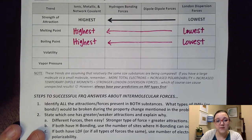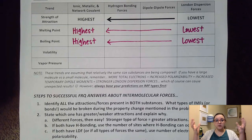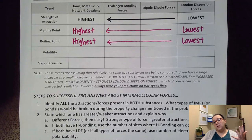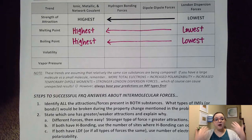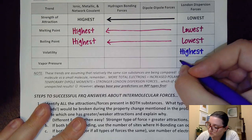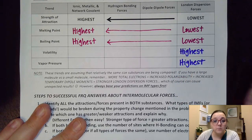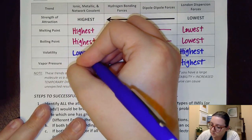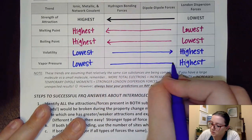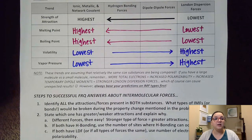We also have volatility and vapor pressure, but we've got to be careful on these. Volatility is the ease of evaporation — how easily does it separate and change over to the gas? Vapor pressure is the pressure exerted by the gas coming off the surface of a liquid as evaporation takes place. For both of those, if my molecules are weakly held together, they're going to be able to separate and evaporate off. So for both of these, the highest end would actually be predicted on our London dispersion side, whereas our lowest values would be where I have the strongest attractive forces. Volatility and vapor pressure work opposite to melting point and boiling point as far as those trends are concerned.